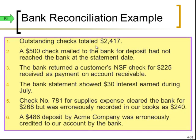We have outstanding checks totaling $2,417. That means we've already recorded these checks on our books and deducted the cash, but the bank hasn't yet. So we need to adjust it out of the bank side. Also, a $500 check mailed to the bank for deposit had not yet reached the bank at the statement date. We already recorded it, so our book is correct, but the bank side is not — it's a deposit in transit we need to add on the bank reconciliation.